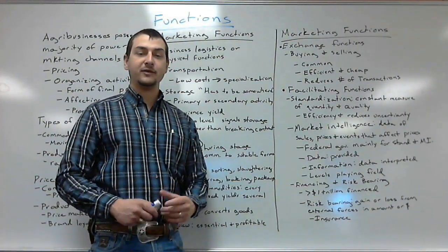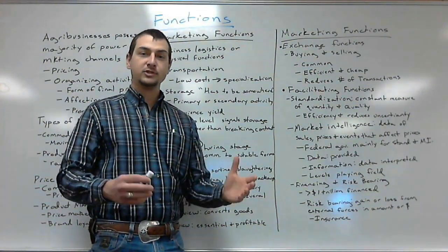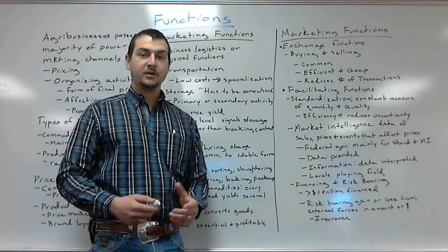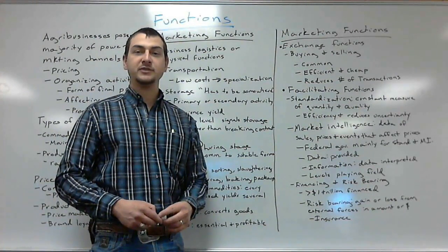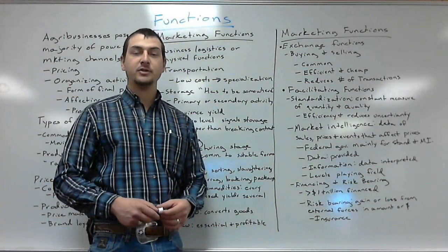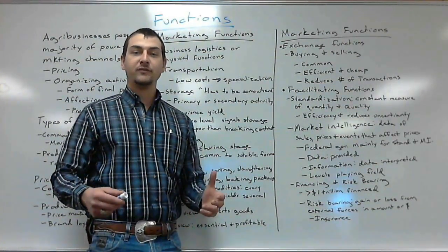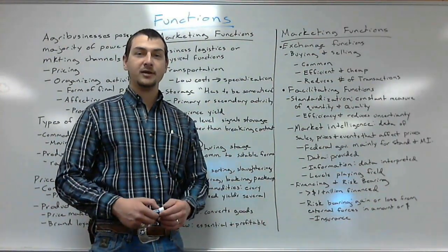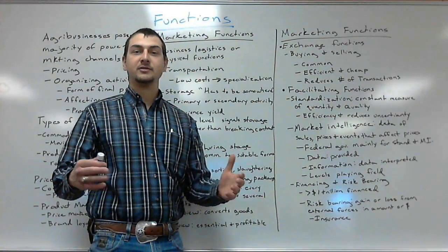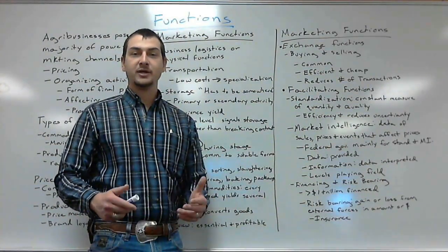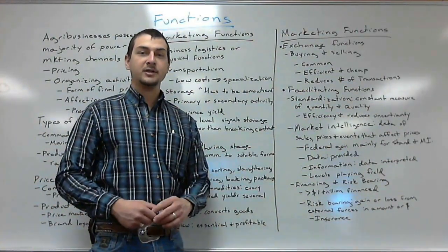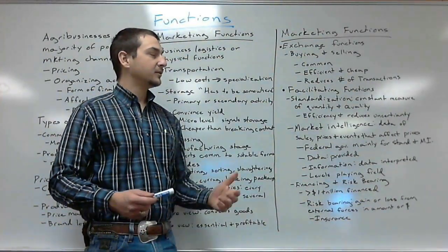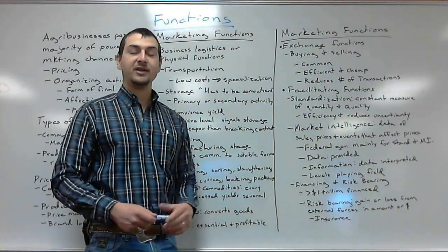How would you like it if every single animal sold within the United States required 30 minutes of haggling? According to the book, 215 hogs are sold every minute within the United States on average. What if every hog sold took 30 minutes of haggling to get the price down? That becomes an impressive amount of time. So as a result, we've developed ways in the agricultural marketing sector to make this buying and selling very cheap and very efficient.